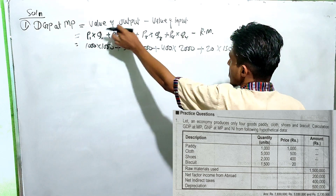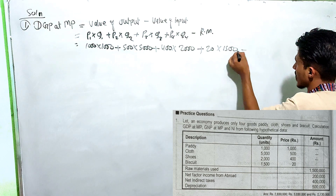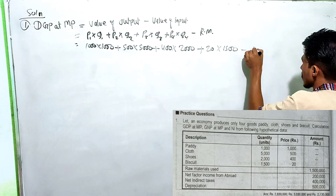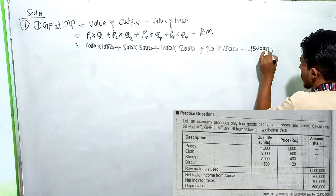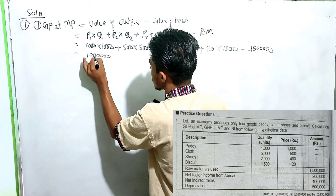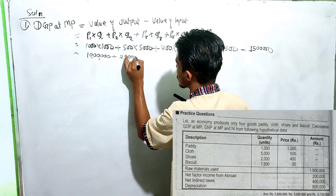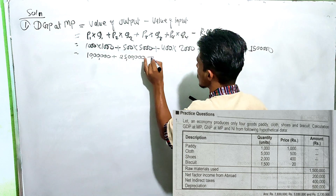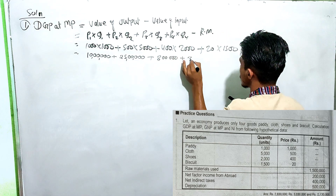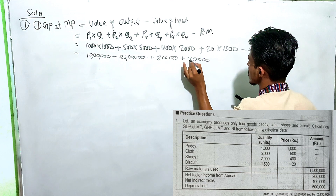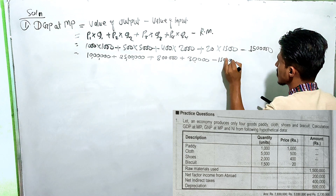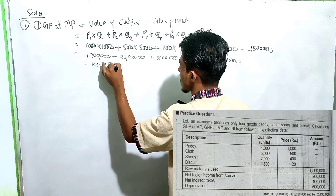If you multiply the price of 10 by 1,000, that makes a value, then subtract the raw material cost. The result is 5,000,000. Adding the components: 5,000,000 plus 1,000,000 plus 3,000,000 equals Rs. 28,30,000. So GDP at MP is equal to Rs. 28,30,000.